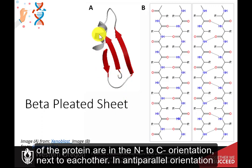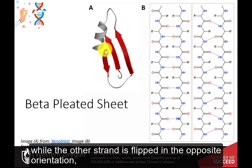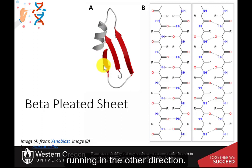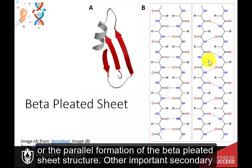In anti-parallel orientation, one strand is in the N to C orientation, while the other strand is flipped in the opposite orientation, running in the other direction. Hydrogen bonding can stabilize both the anti-parallel formation or the parallel formation of the beta-pleated sheet structures.